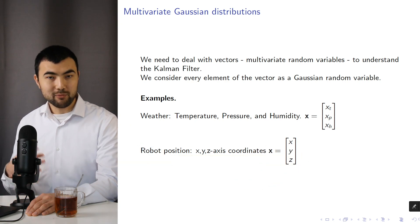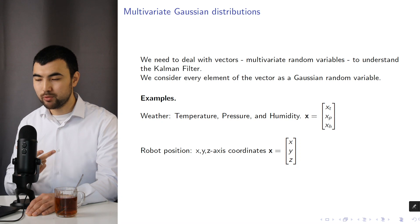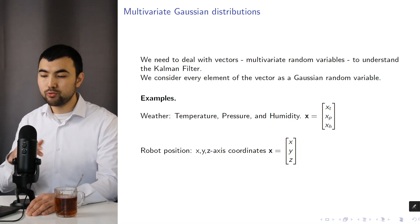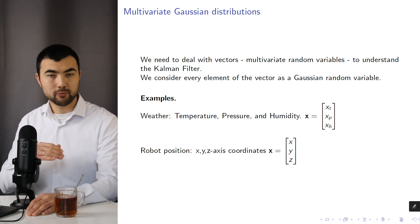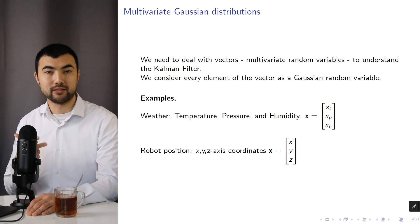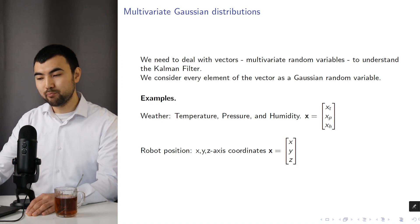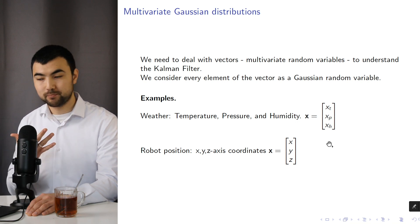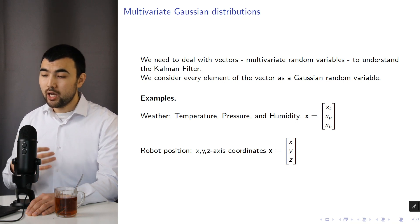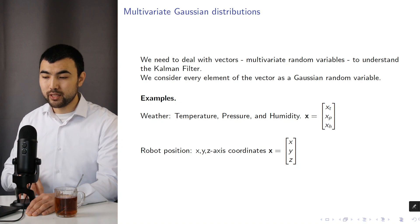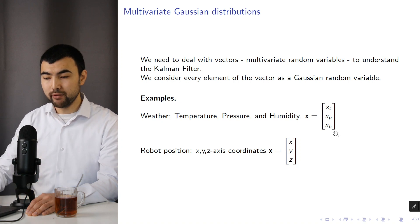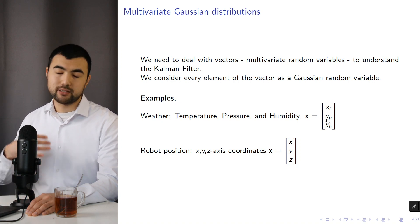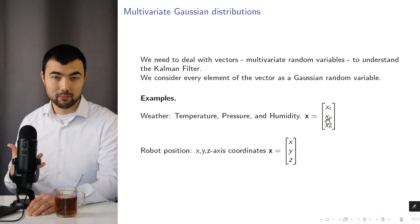To describe the weather, we can use temperature, pressure, and humidity measurements. Or to define the robot position, we can use x, y, and z axis coordinates. So in both situations, we end up with vectors with three elements. In our case, we consider every element of the vector as a Gaussian random variable.